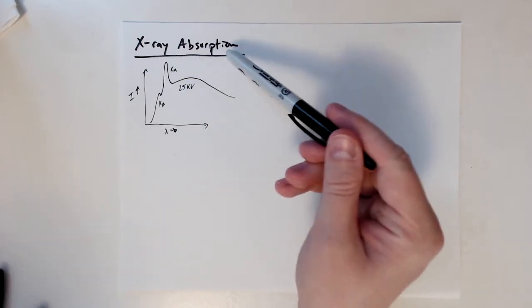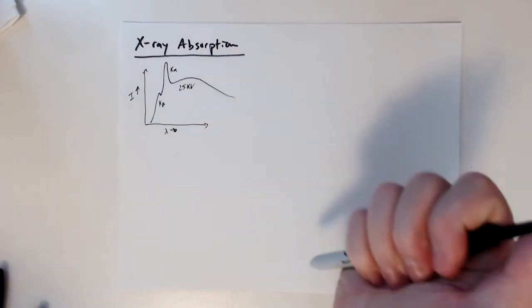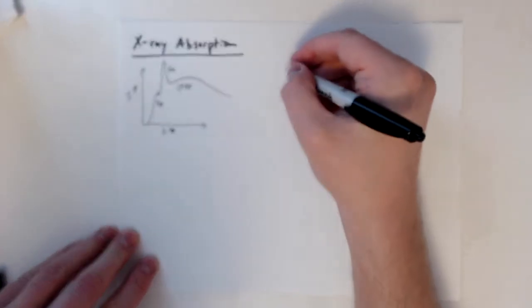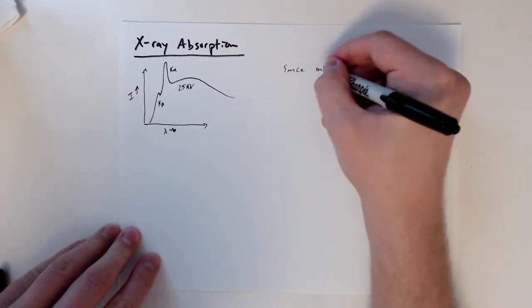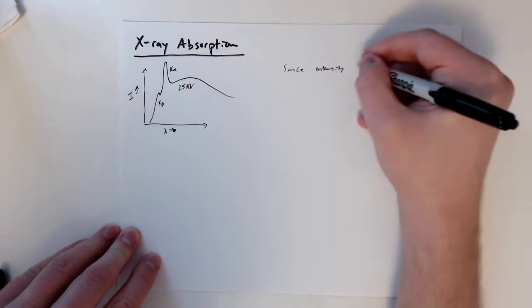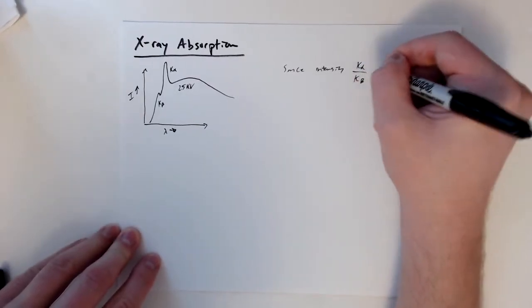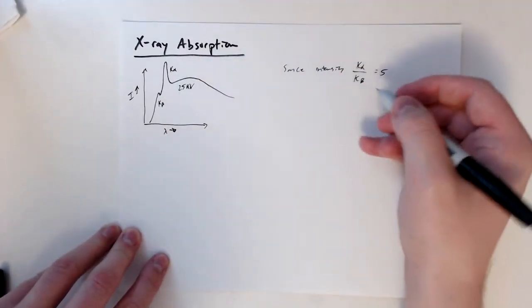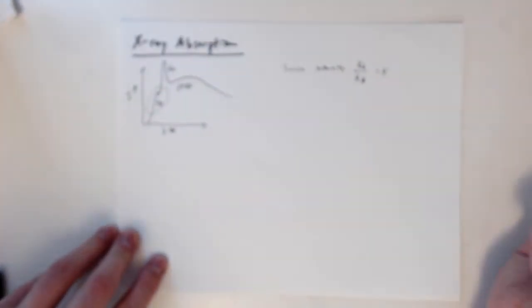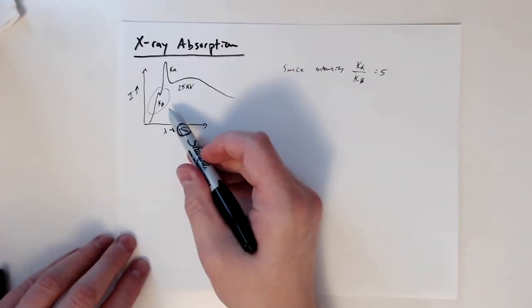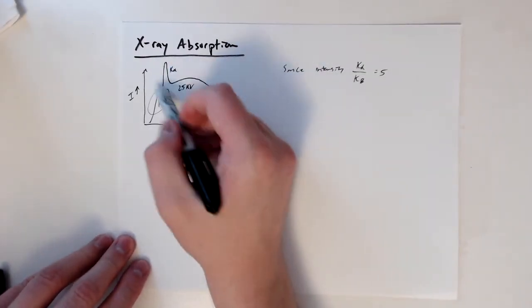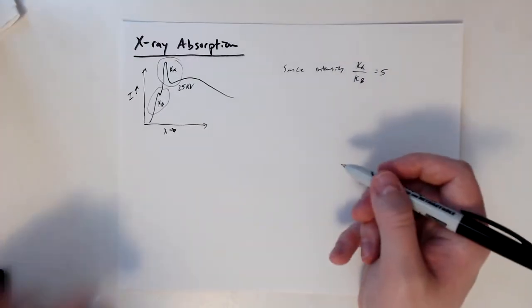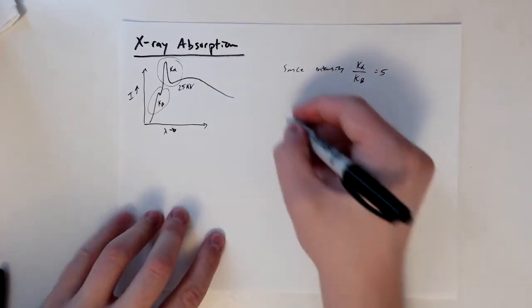We're going to use x-ray absorption to isolate just one wavelength. Since the intensity of K-alpha over K-beta is around five, K-alpha is much more intense. We're going to try to get rid of the K-beta peak and just get one wavelength here.